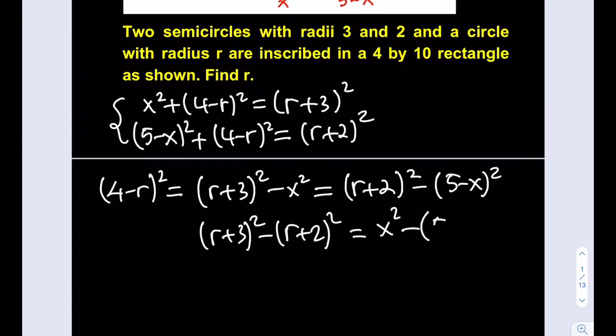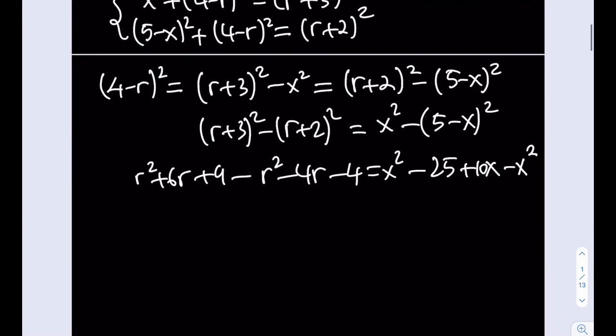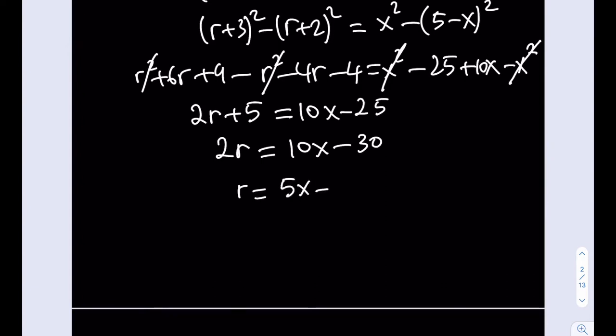r plus 3 squared minus x squared equals r plus 2 quantity squared minus 5 minus x quantity squared. We have this equality, but what's going to make it even nicer is that we can actually put the r terms together and the x terms together. So we can go ahead and bring the x squared over here and expand both of these: r squared plus 6r plus 9 minus r squared minus 4r minus 4. I just negated everything inside the parentheses, and this one is going to be x squared minus 25. Now, this is supposed to be minus 10x, but it's going to turn into a plus sign with the negation, and plus x squared becomes negative x squared.